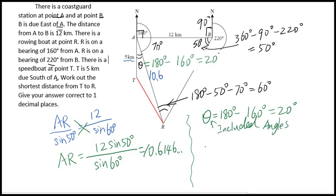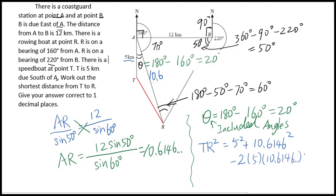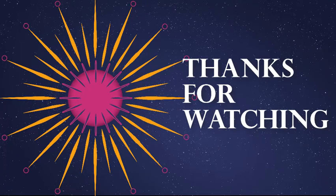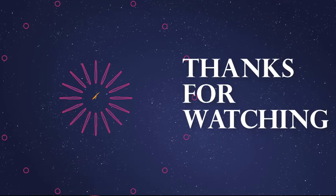Using the cosine law: TR² = 5² + 10.6146² − 2×5×10.6146×cos(20°). Calculate TR and round to one decimal place — you get TR equals 6.2 kilometers.